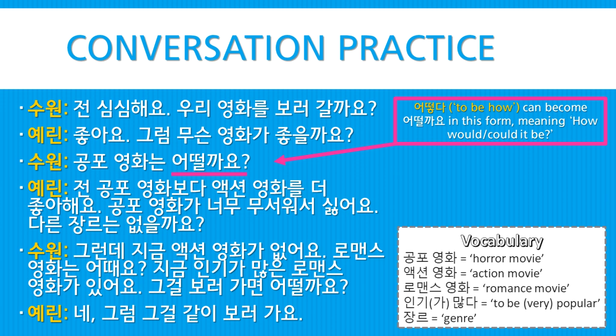공포 영화는 어떨까요? — How would a horror movie be? Here, 어떻다 — to be how — can become 어떨까요 in this form, meaning 'how would' or 'how could it be.' 전 공포 영화보다 액션 영화를 더 좋아해요 — I like action movies more than horror movies. 공포 영화가 너무 무서워서 싫어요 — I don't like horror movies because they are too scary.